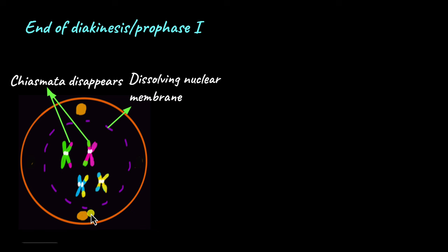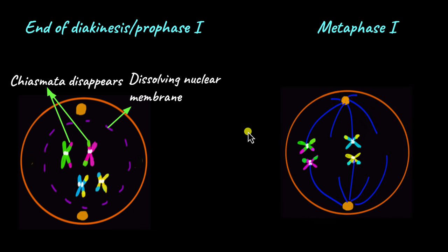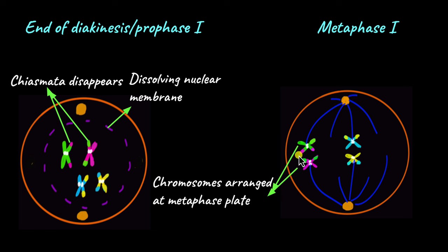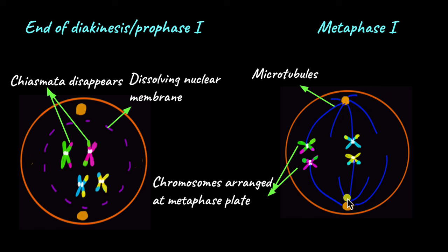At this stage, the centrosomes have fully moved to opposite poles of the cell and begin to radiate microtubules. As prophase 1 ends, the nuclear membrane has fully dissolved, and as metaphase 1 progresses, the homologous chromosomes arrange at the centre of the cell known as the metaphase plate. Microtubules come and attach at the kinetochore of each homologous chromosome — microtubules from one side attach to one homologous chromosome and microtubules from the other side attach to the other.